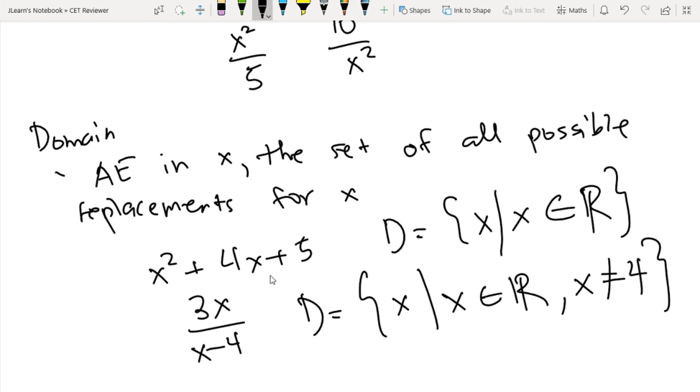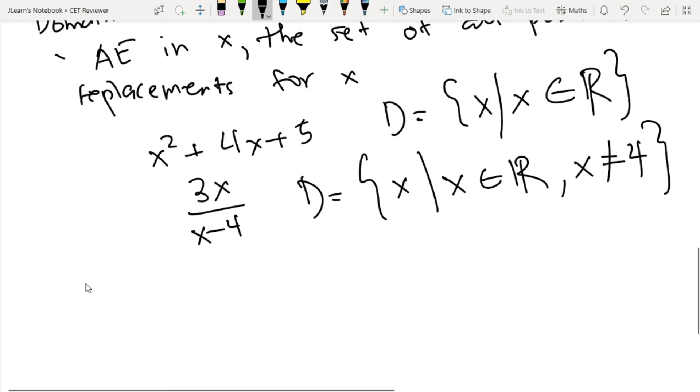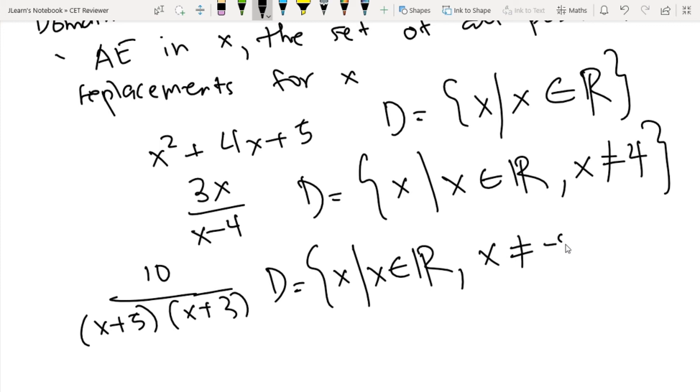So we can also extend this into more terms. So kunyari we have 10 over (x+5)(x+3). So ang domain neto ay x such that x is an element of all real numbers basta yung x is not equal to negative 5 or negative 3, kasi kundi magiging zero yung denominator.